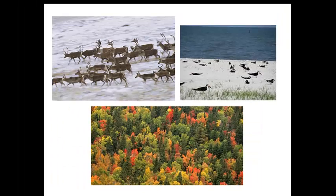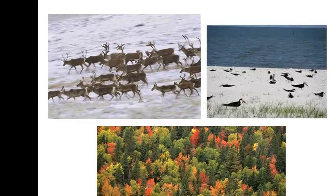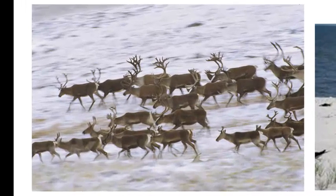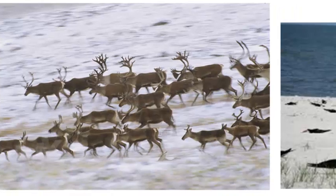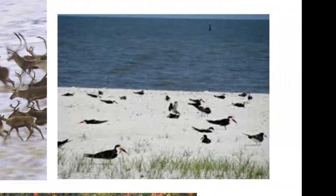Clumped dispersion can be seen in organisms that live in herds. For instance, with caribou, you will find many individuals clumped together living in family groups or herds that move together. Even distribution is a lot more rare — that's when all the members of the population are evenly distributed. This happens in situations like with terns, where all the terns nest on the same beach almost exactly the same distance away from each other.